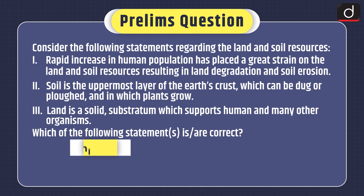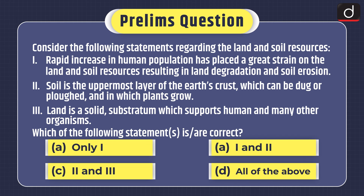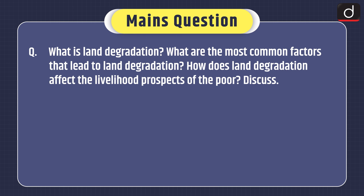Now it's time for practice questions. Prelims-based question: Consider the following statements regarding land and soil resources. One: rapid increase in human population has placed a great strain on land and soil resources, resulting in land degradation and soil erosion. Two: soil is the uppermost layer of the earth's crust which can be dug or plowed and in which plants grow. Three: land is a solid substratum which supports humans and many other organisms. Which of the statements is or are correct — only one, one and two, two and three, or all of the above? You can send the answer in the comment section. Mains practice question: What is land degradation? What are the most common factors that lead to land degradation? How does land degradation affect the livelihood prospects of the poor? Discuss.